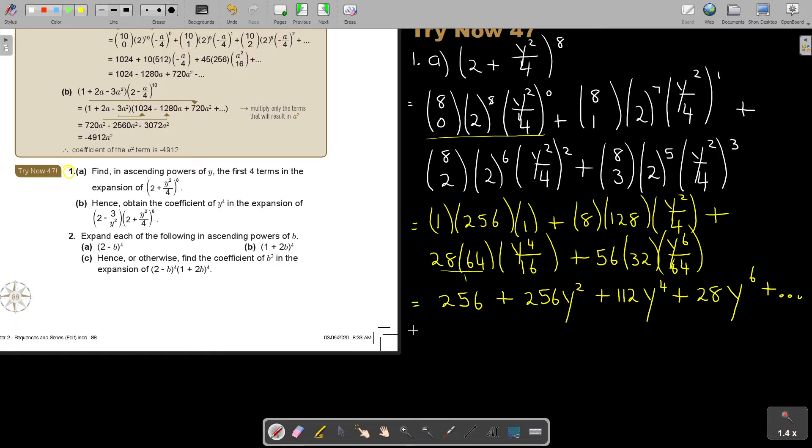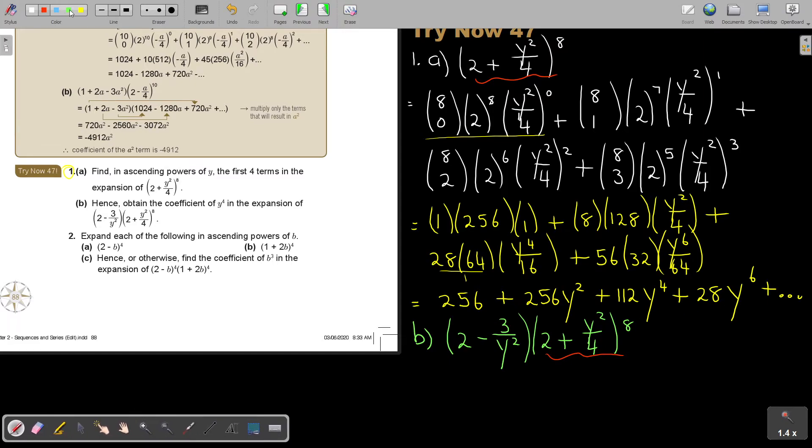Let's look at number B. Then you obtain the coefficient of y to the power of 4 in the expansion of this. So first write it down. So it's 2 minus 3 over y squared, times 2 plus y squared over 4 to the power 8. Just take note that this is this. And that is the reason why you worked out that four terms. So basically, you're just going to now just rewrite this one.